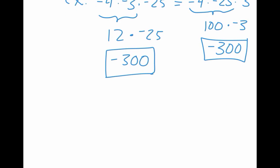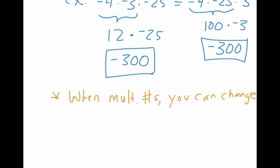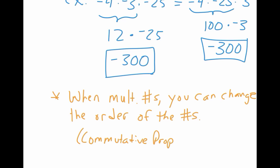When multiplying numbers, you can change the order of the numbers — that's the commutative property of multiplication. Look for ways to combine numbers in a different order to make multiplication easier. The same property applies to addition; you can add numbers in either order. But subtraction and division do not have this property.